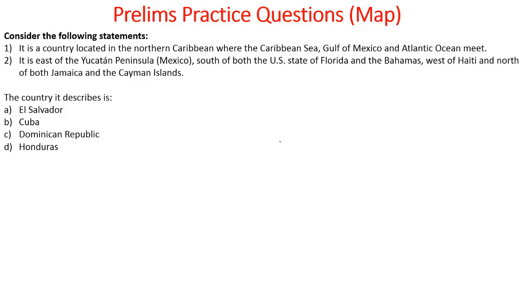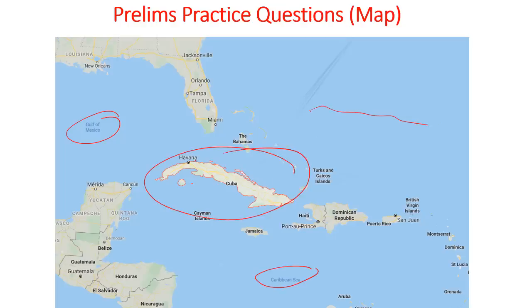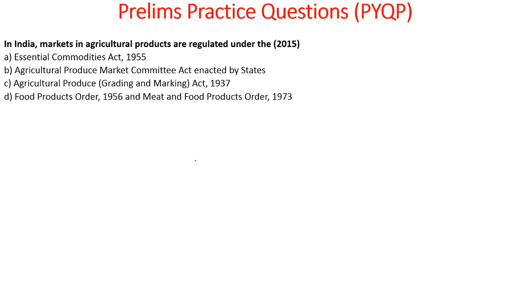Consider the following statements describing a country: it is located in the Northern Caribbean where the Caribbean Sea, Gulf of Mexico and Atlantic Ocean meet; it is east of the Yucatan Peninsula, south of both the US state of Florida and the Bahamas, west of Haiti and north of both Jamaica and the Cayman Islands. The country it describes is Cuba. In India, markets in agricultural products are regulated under the Essential Commodities Act of 1955 — this has been asked in UPSC in the year 2015.